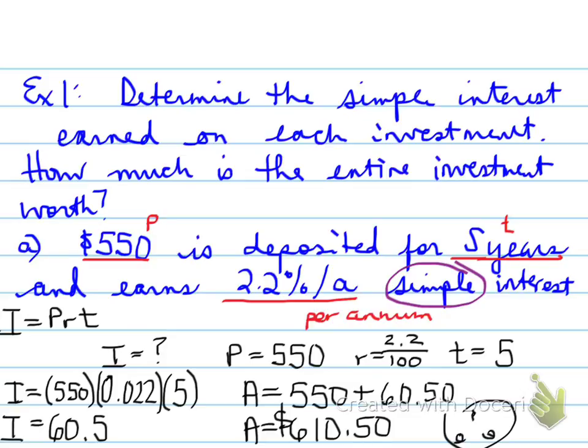Don't forget the therefore statement, folks, so therefore, $610.50 is available after five years. All right, try another one.